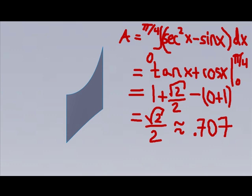So let's use calculus to determine the analytical solution and see how close we are. I'm going to integrate my two curves, the top curve being secant squared x and the bottom curve, subtracting the bottom curve being sine x. I integrate from 0 to pi over 4. Since I'm going along the x-axis, I integrate with respect to dx.